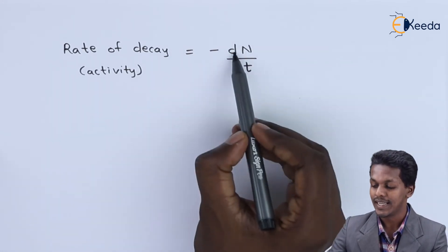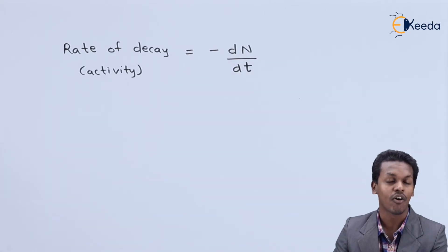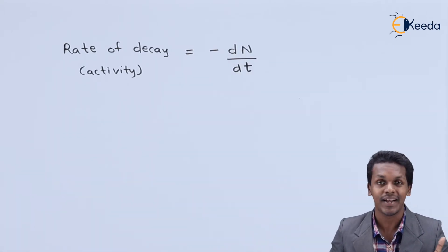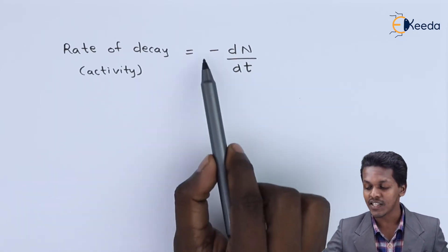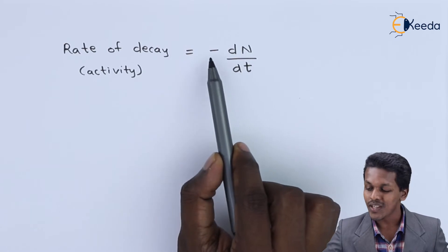So this dN means the number of nuclei of the atoms of a particular element that has decayed with respect to time. Here you can see there is a minus sign. What does this mean?